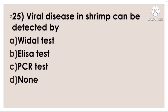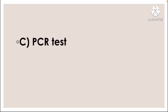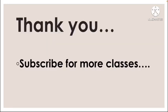Next question: Viral disease in shrimp can be detected by — option A vital test, option B ELISA test, option C PCR test, option D none. Correct answer: option C, PCR test. Thank you.